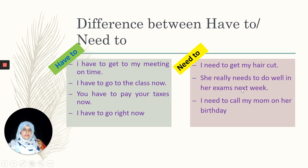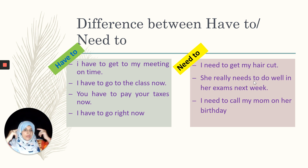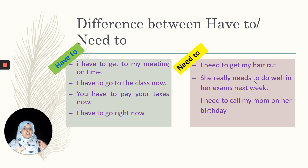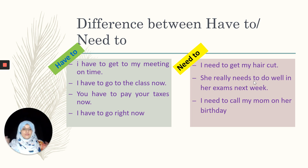Second example: she really needs to do well in her exams next week. Why does she need to do well? The benefits and advantages are in our mind — if she does well in the exam she can get good grades, and as a result she can get admission to a good university, along with all the other advantages associated with doing well in exams.